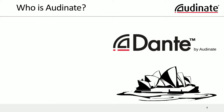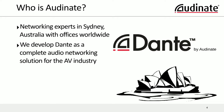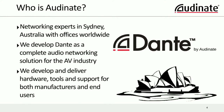First, I want to answer the question: who is Audinate? We are a company out of Sydney, Australia, formed by networking experts. We have offices around the world, including Hong Kong, London, and Portland, Oregon. We develop Dante as a complete solution that we sell to the AV industry to give them a platform for network connectivity. We develop every part of Dante — the hardware that goes into products, the tools used to develop it, the support, and software for end users.